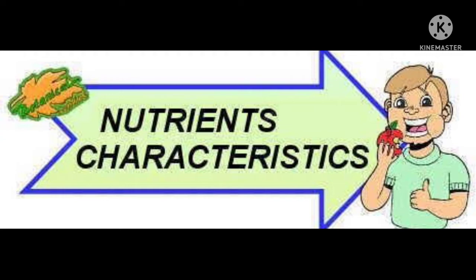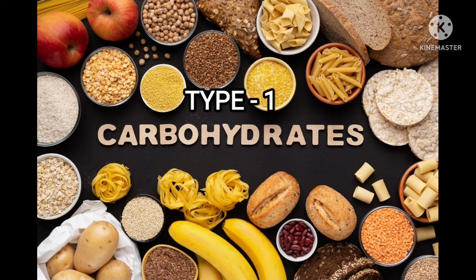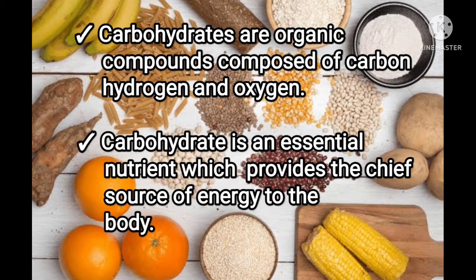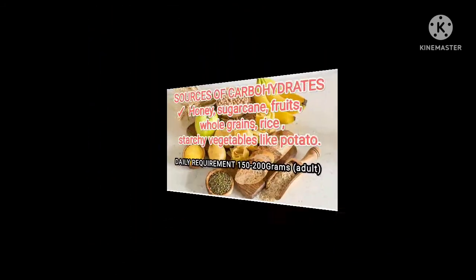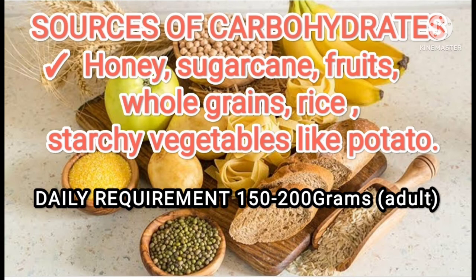Carbohydrates and their characteristics: Carbohydrates are organic compounds composed of carbon, hydrogen, and oxygen. Carbohydrate is an essential nutrient which provides the chief source of energy to the body. The classification of carbohydrates includes monosaccharides, disaccharides, and polysaccharides — for example, glucose, sucrose, and cellulose. Sources include bread, honey, sugar cane, fruits, whole grains, rice, and starchy vegetables like potato. The daily requirement of carbohydrates is 150 to 200 grams.